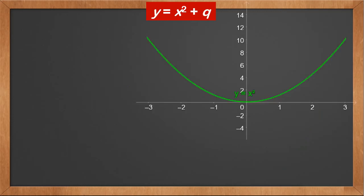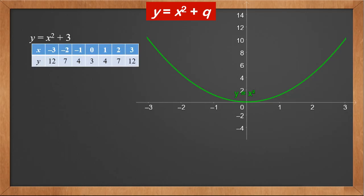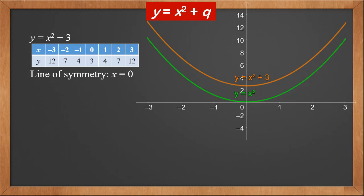Now let's see the graphs of y equals x squared plus q, and how we can transform the graph of y equals x squared to it. Now let's look at y equals x squared plus 3. Let's find the y values of the same x values. Each value is larger by 3 now. They are 12, 7, 4, 3, 4, 7, 12. Plotting all points, we can see that it's actually y equals x squared moved up along the y axis by 3 units. The line of symmetry is still x equals 0, and the vertex becomes (0, 3).